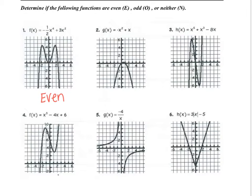Let's look at example number two. Does example number two have symmetry with respect to the y-axis? This vertex looks like it's pretty close to the origin, but it's actually shifted a little bit to the right, so this one's not even. It could be odd, but we'll go there after. Does number three have symmetry with respect to the y-axis? Flip it over — no. Number four? No. Five? No. Six? Yes, so six would be even.